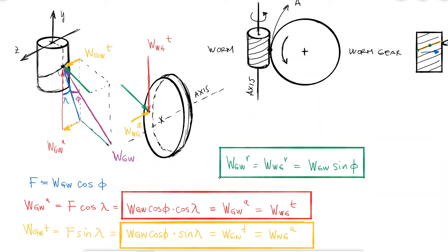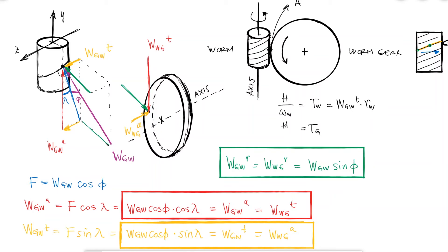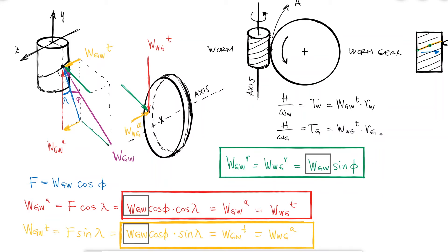If the worm is driving the gear, the power and speed information will allow me to calculate the torque the worm is transmitting, which gives the tangential component of W_GW. But if what I know is the torque of the gear, then the first component I'll find is the tangential component of the force from the worm to the gear. That's why we leave these expressions in terms of the overall force W_GW.